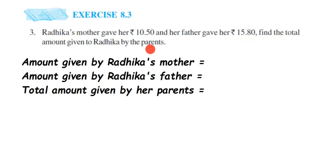So the mother gave rupees 10.50 and the father gave rupees 15.80. We have to find out the total amount. Total means we have to do addition here. The amount given by Radhika's mother is rupees 10.50 and the amount given by Radhika's father is rupees 15.80.